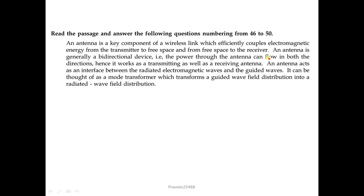From question 46 to 50, a passage is given: An antenna is a key component of a wireless link which couples electromagnetic energy from the transmitter to free space and from free space to the receiver. An antenna is generally a bi-directional device, so it works as both a transmitting and a receiving antenna. An antenna acts as an interface between radiated electromagnetic waves and guided waves, transforming a guided wave field into a radiated wave field.